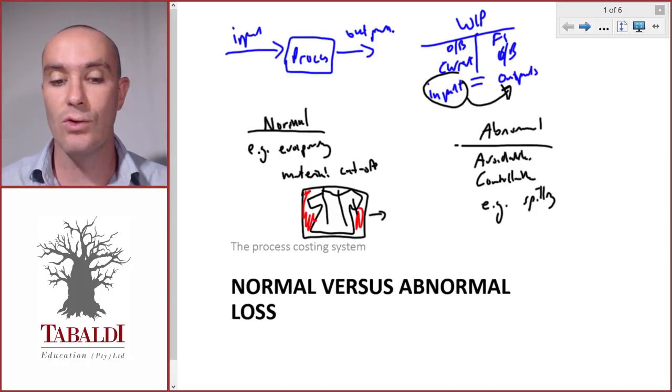Make sure that you understand the difference between normal losses and abnormal losses. Normal losses form part of the normal process. There's nothing funny about it. We expect it to happen. Whereas abnormal losses are something that's avoidable and that should not be happening.